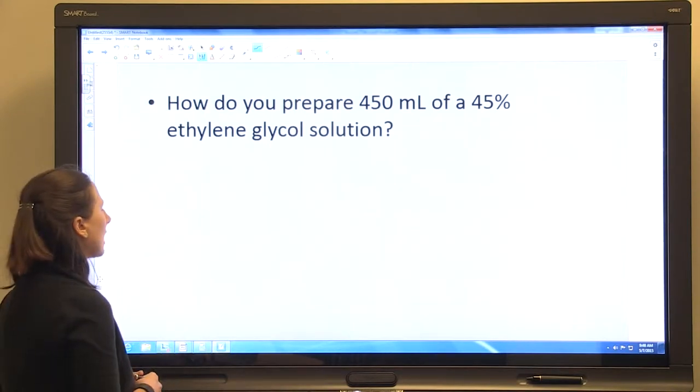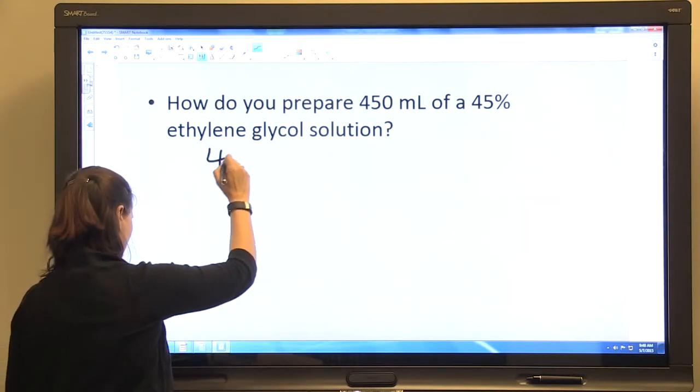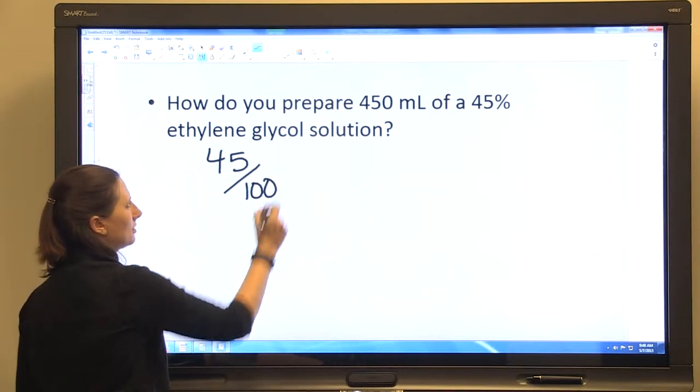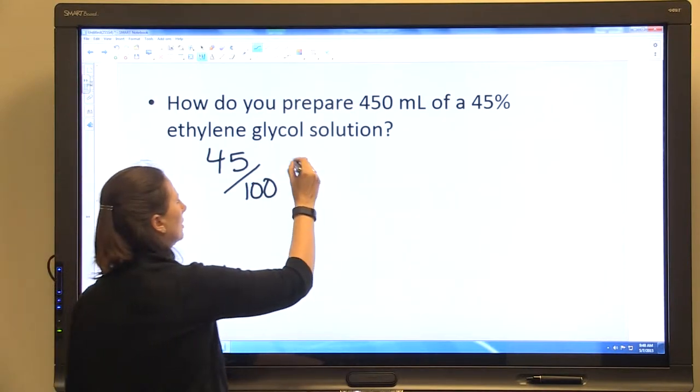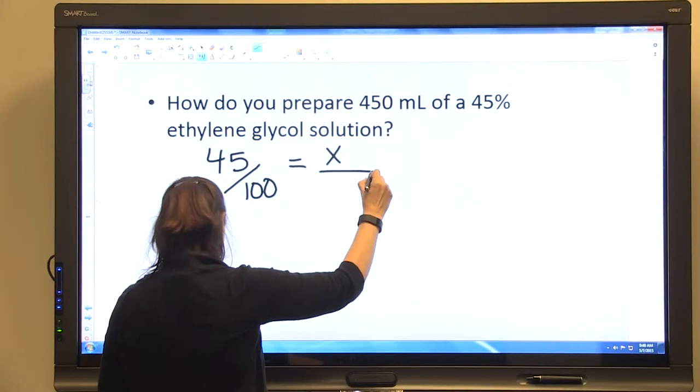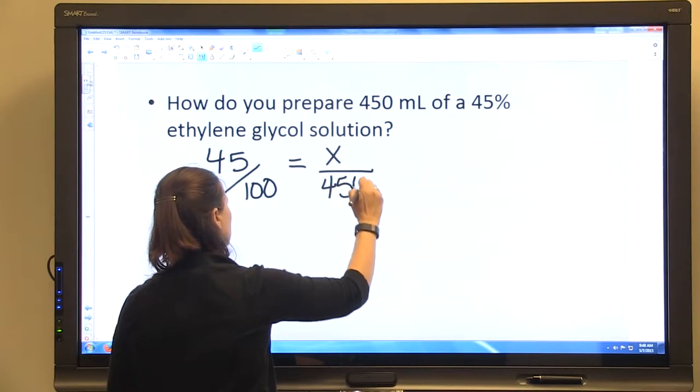So we can say we need 45 out of 100 parts to be ethylene glycol and we need 450 mLs.